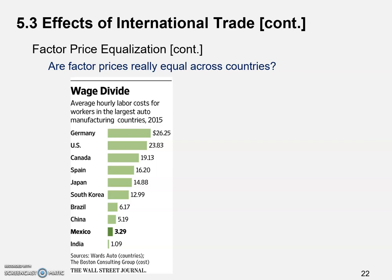Germany has the highest labor cost per hour at $26.25, and the US comes second at $23.83, with all figures converted to US dollars. It goes all the way down to Mexico at $3.29 per hour and India at $1.09 per hour. There is a huge gap in auto manufacturing labor costs — they are not equal at all.